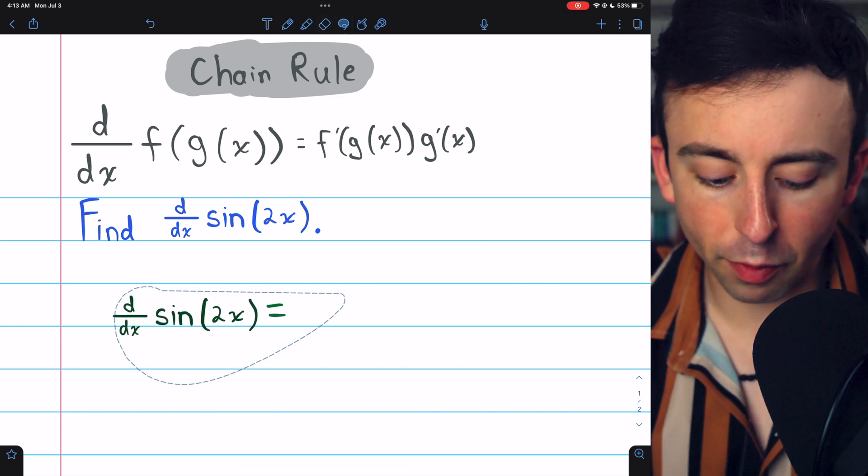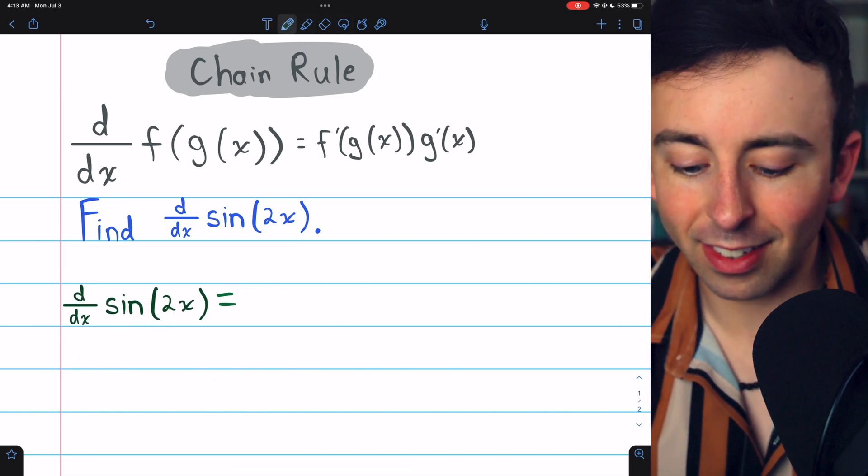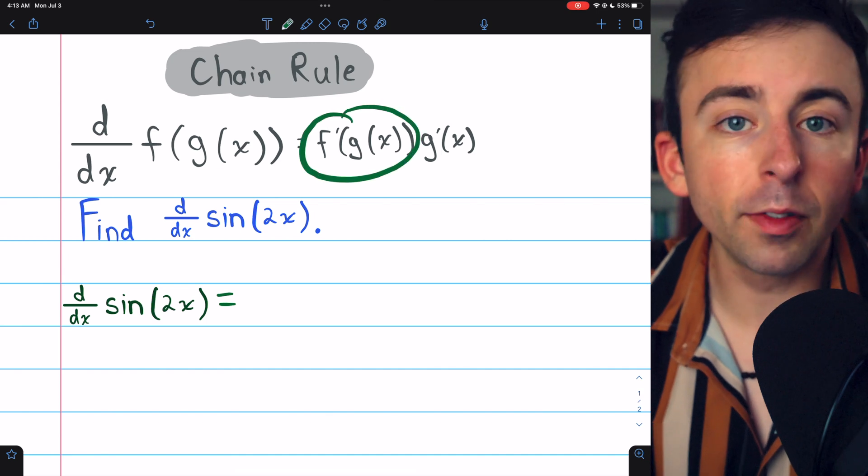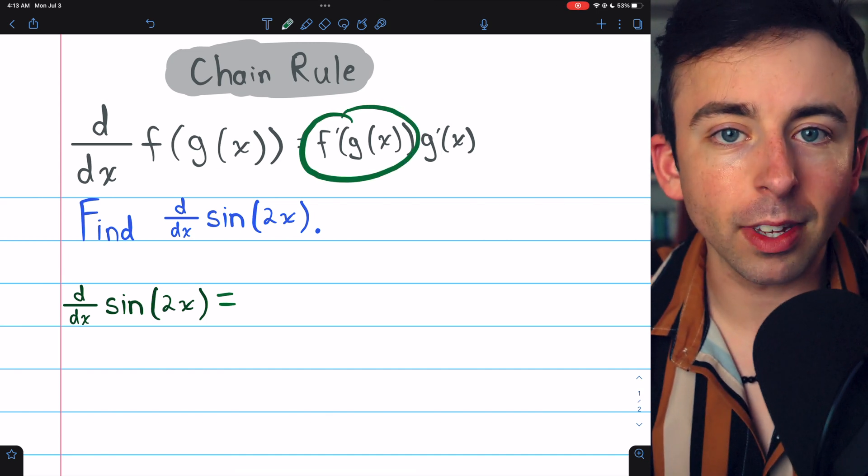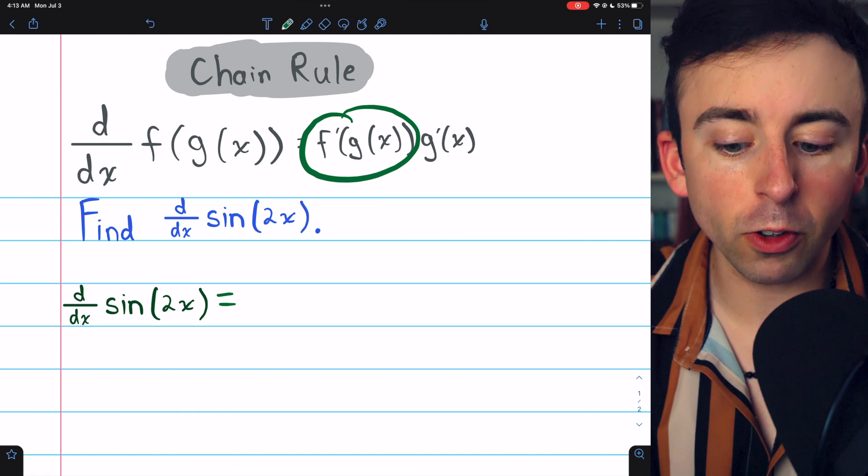So it should be pretty straightforward to take the derivative. Let's give it a try. We begin with f prime of g of x, the derivative of the outside function, leaving the inside function unchanged.